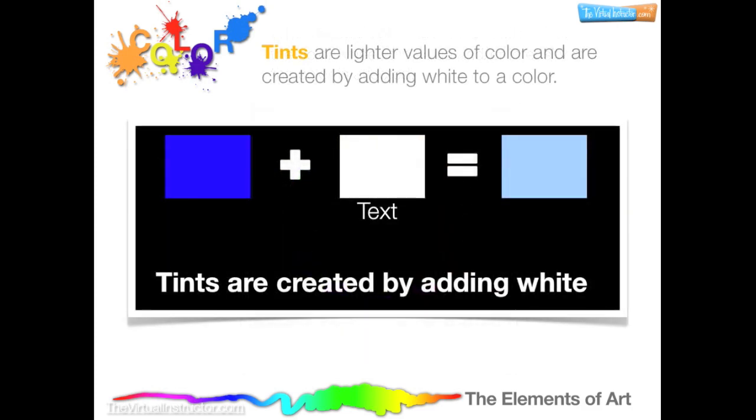Tints are lighter values of color, and are created by adding white to a color. When white is added to blue, you create a tint of blue.